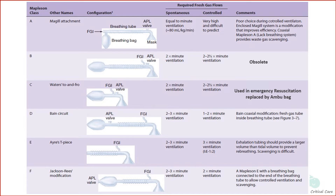Mapleson D, or Bain's circuit, is best for controlled ventilation. Mapleson B is obsolete and C is rarely used today — it was used for emergency resuscitation but has been replaced by an Ambu bag.